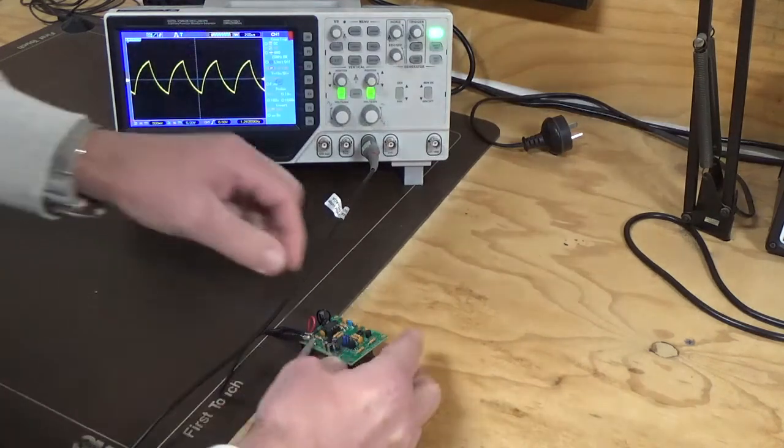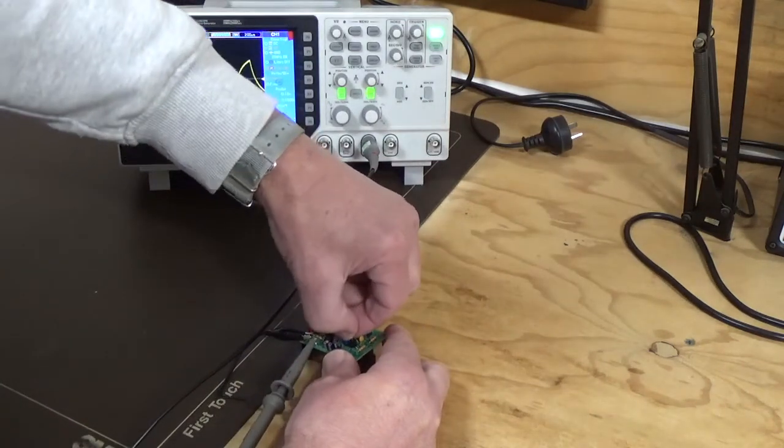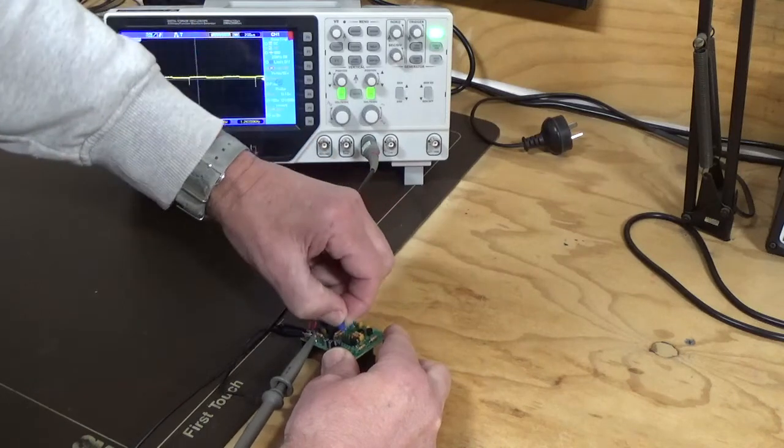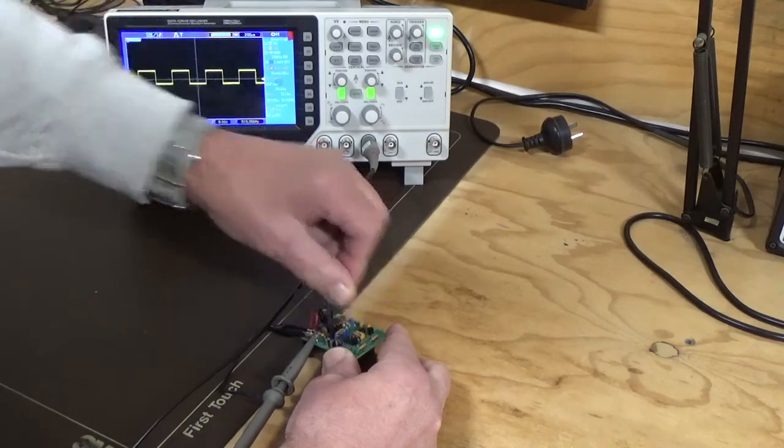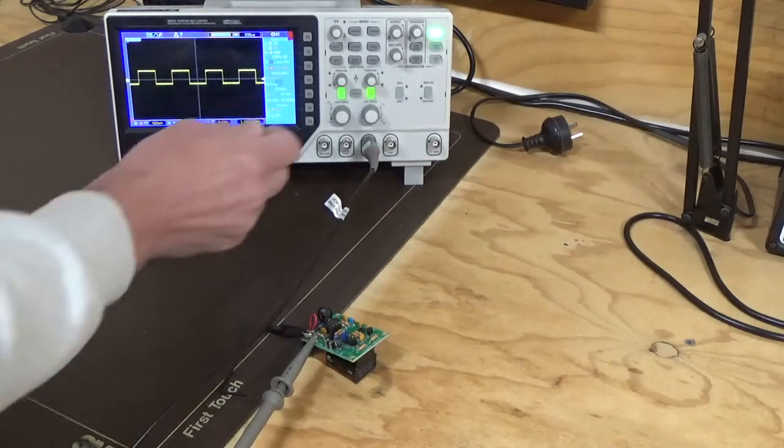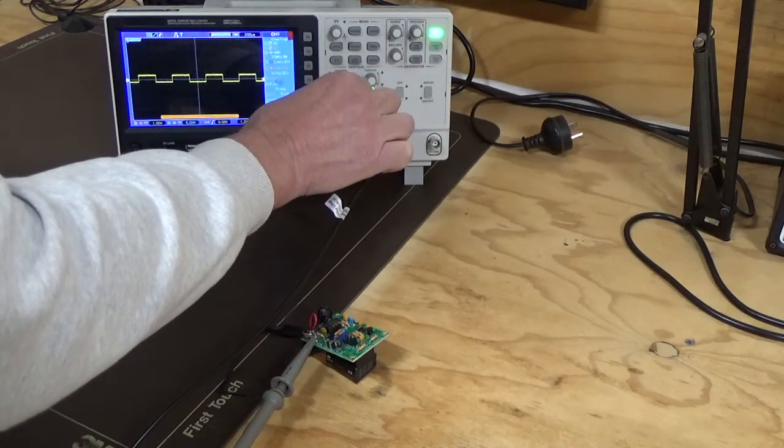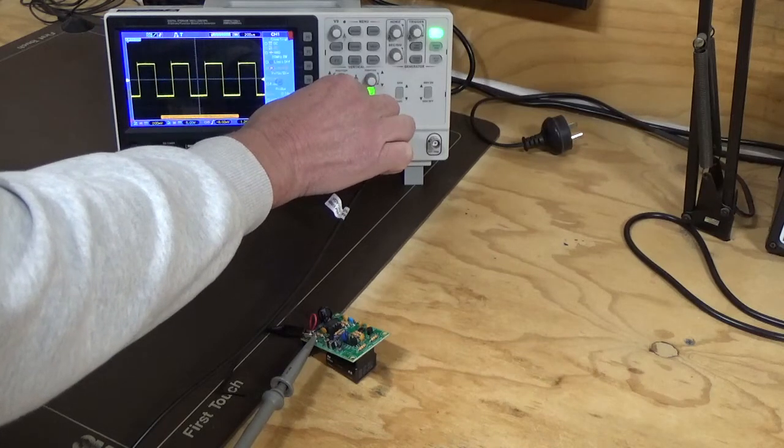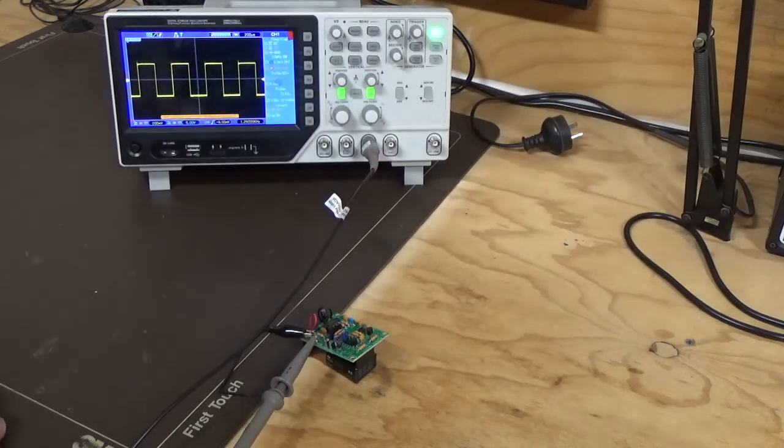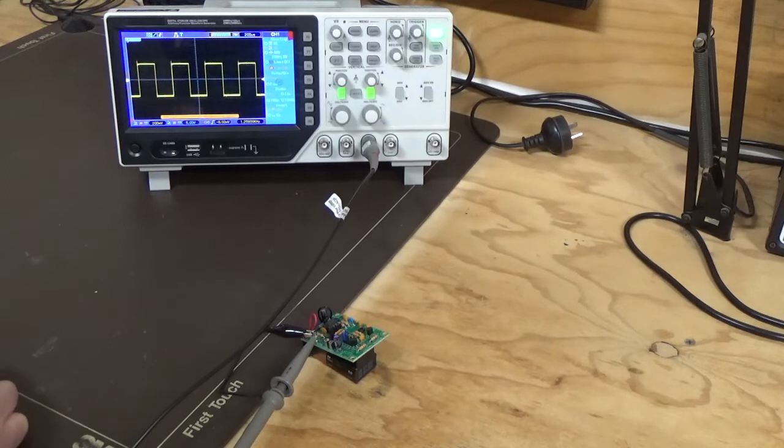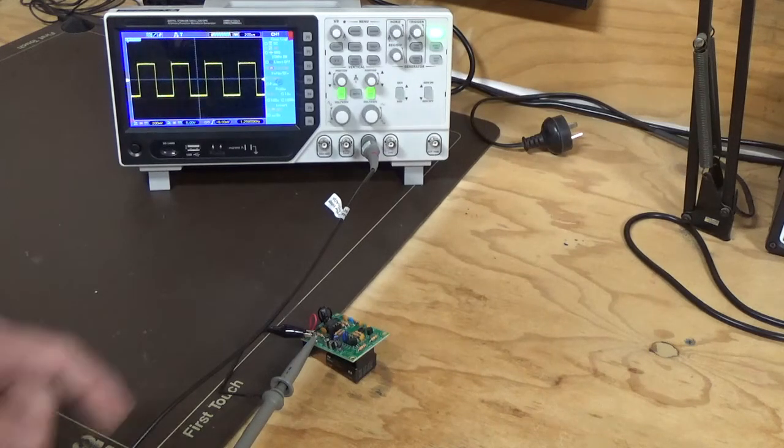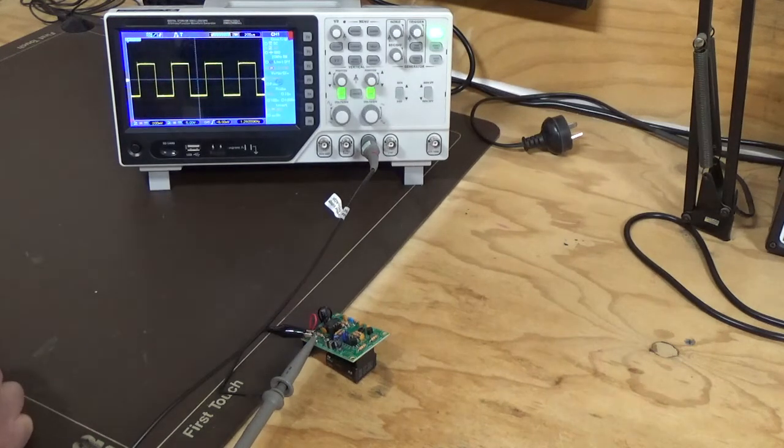And the next one under that is your square wave. And there's your square wave there. So it's not too bad a square wave. For a simple circuit. And it's only working off the 555 timer. And it's providing those four waveforms.